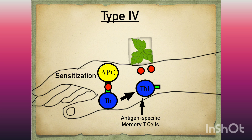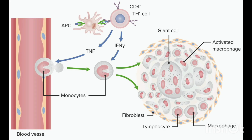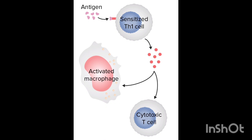Type 4 hypersensitivity reaction, or cell-mediated immunity, is an immune response which takes 2 to 3 days to develop. It does not require antibodies but rather involves activation of phagocytes, natural killer cells, and T lymphocytes, while releasing various cytokines in response to an antigen.